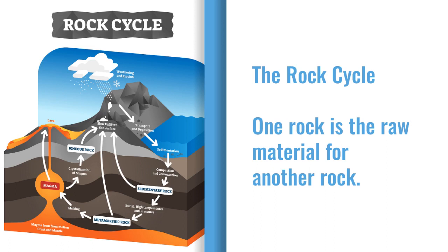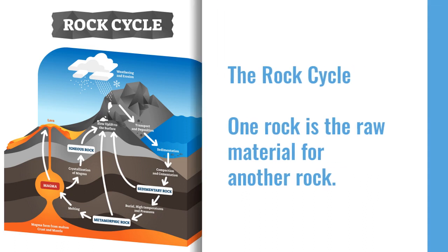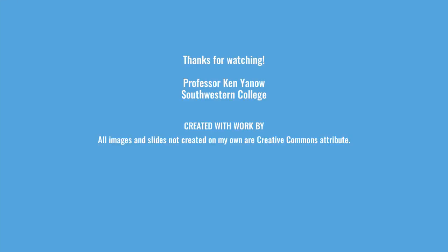Sedimentary rocks form from the erosion of sedimentary, metamorphic, and igneous rocks. And igneous rocks form from the melt of igneous, sedimentary, and metamorphic rocks that find their way into a magma chamber. I hope you learned something new about minerals and rocks and the rock cycle.